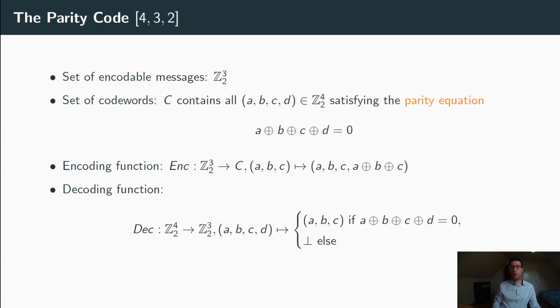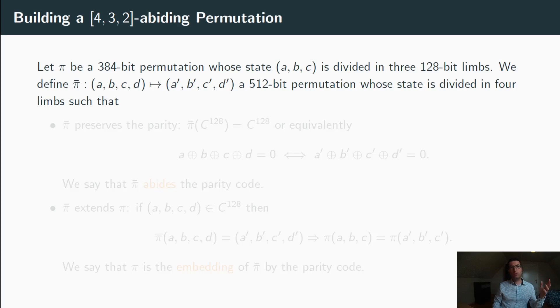And on the other hand, to decode a 4-bit value ABCD, you just map it to ABC if ABCD is a valid codeword, meaning that it satisfies the parity equation. And if it is not a valid codeword, then an error is returned.